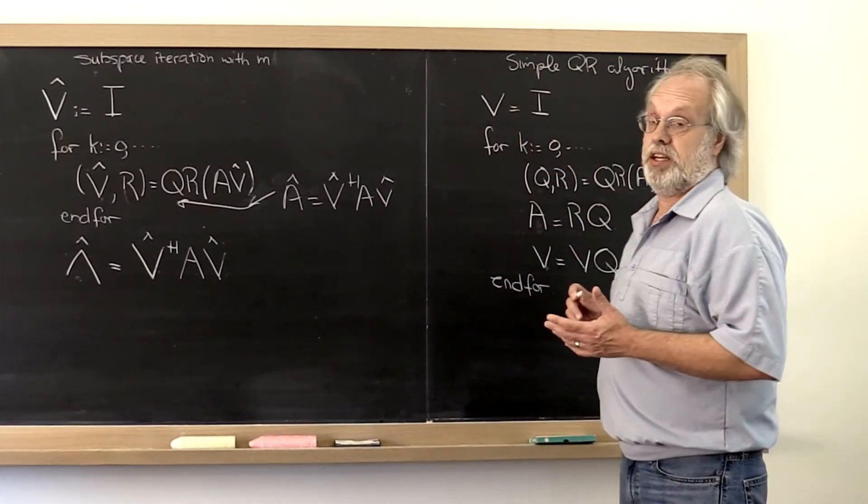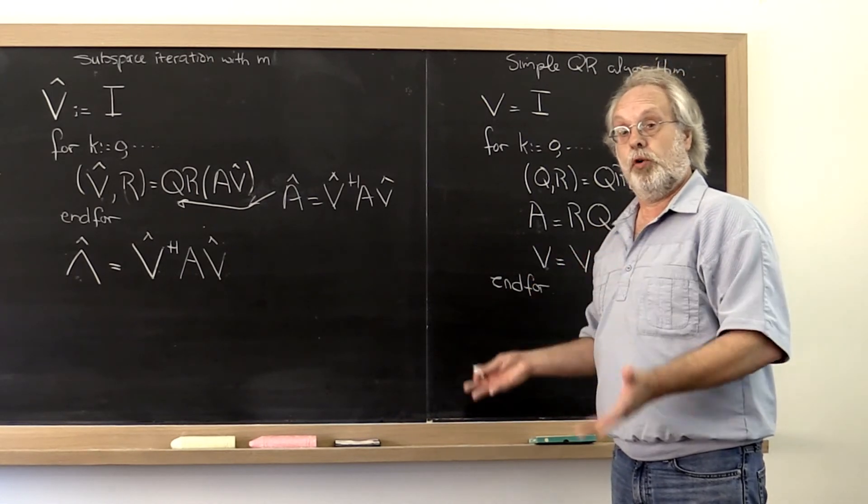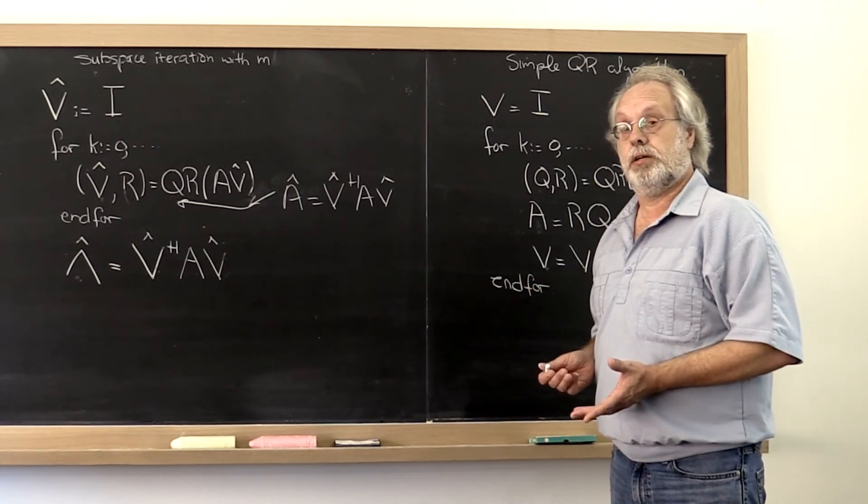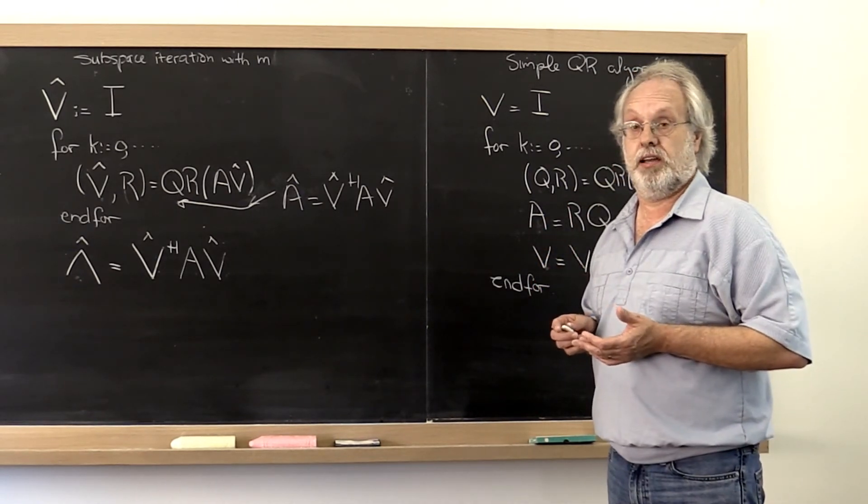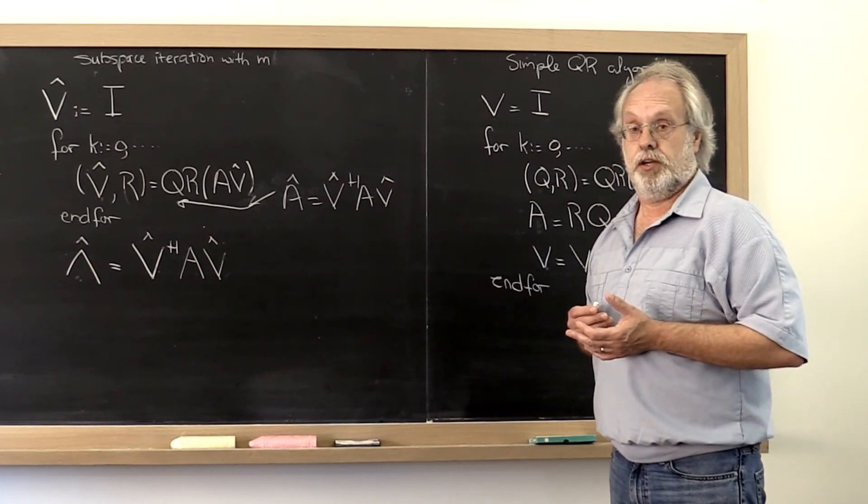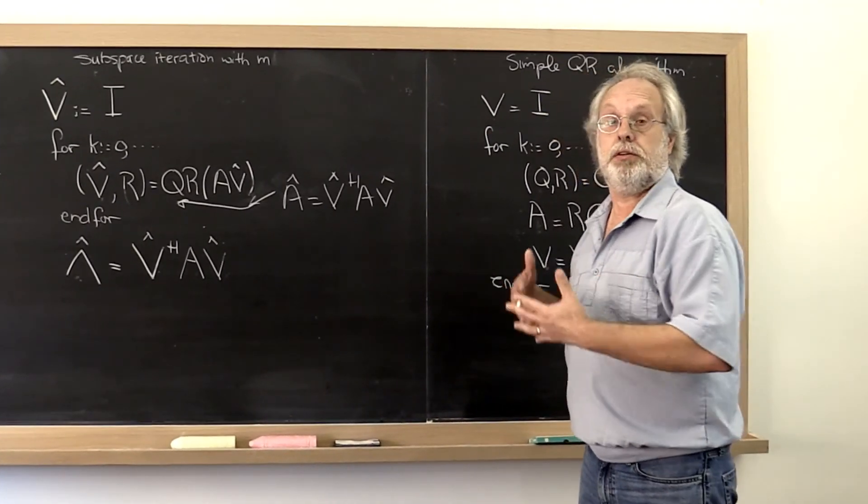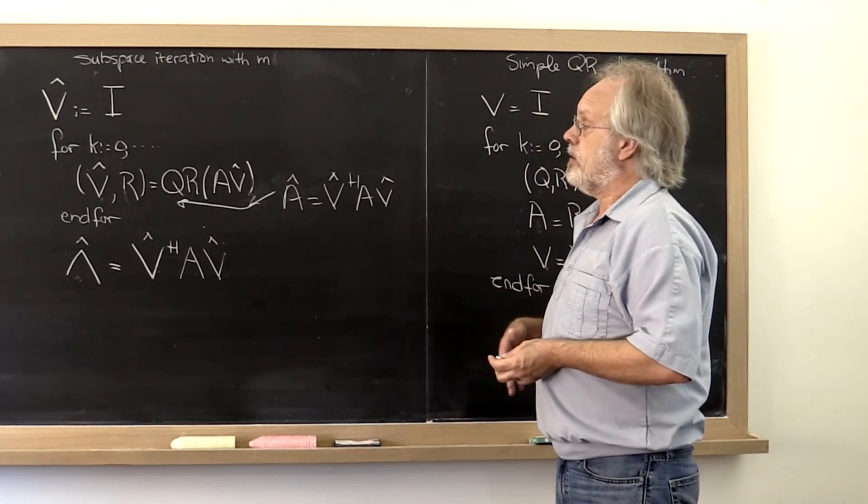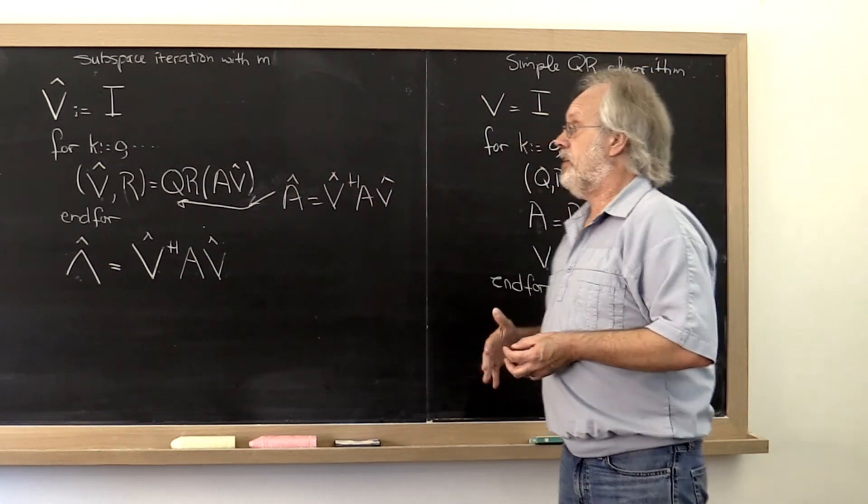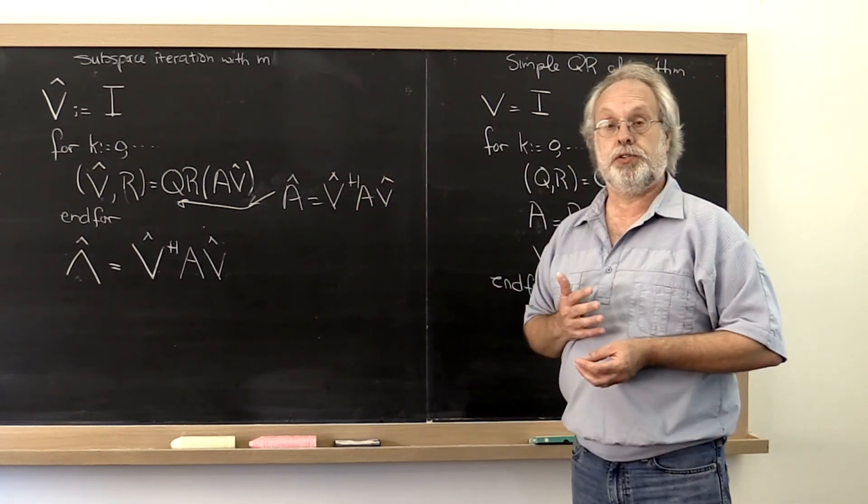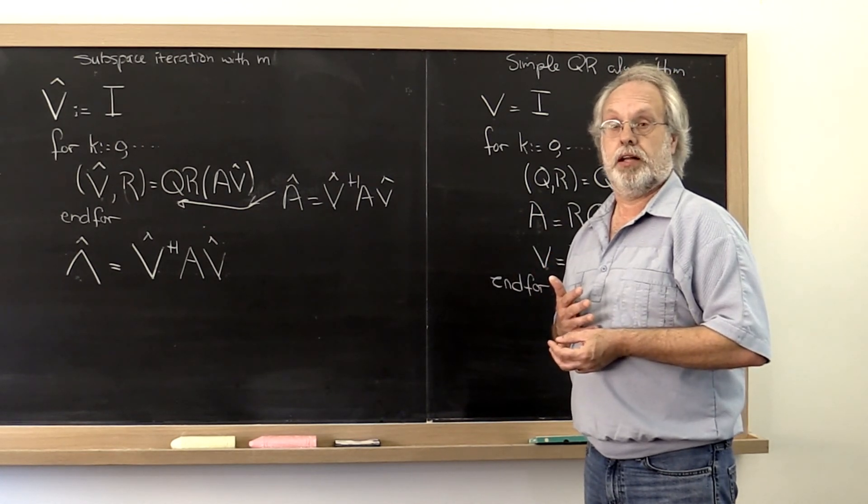This algorithm is known as the QR algorithm. It is really a way of reformulating subspace iteration. But it turns out there's a huge advantage to formulating it this way as opposed to the subspace iteration with m columns. We're going to ask you to do a homework exercise where, through mathematical induction, you prove the similarity or equivalence of these two algorithms.